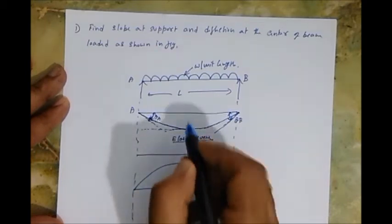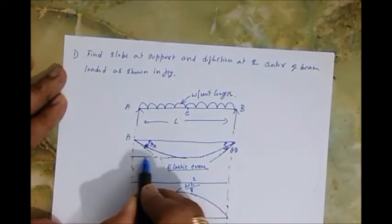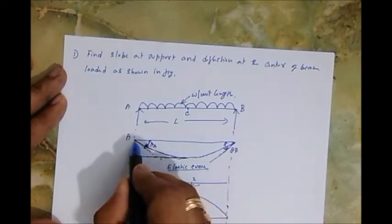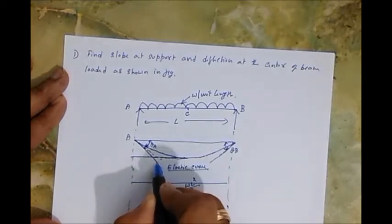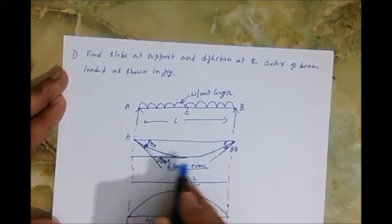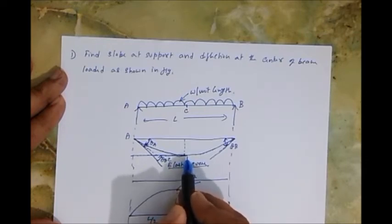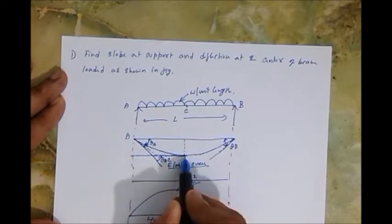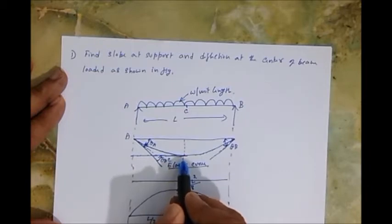If I draw the tangent at point C (the central point), the angle theta AC is formed between the tangents drawn at A and C. The reason I take C as the second reference point is that C is the location of maximum deflection. At point C, by symmetry, the slope of the elastic curve is zero. That's why I consider C as my second reference point when applying the theorem.